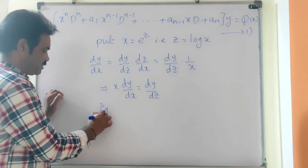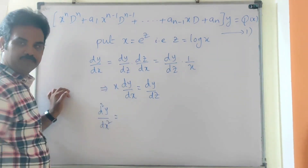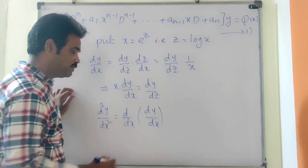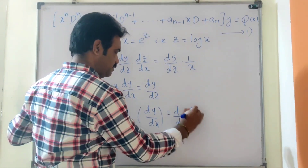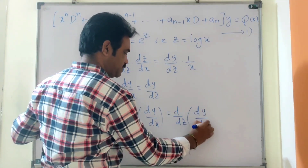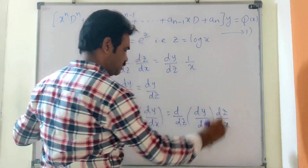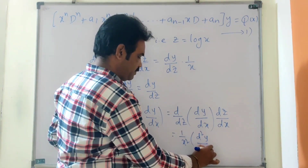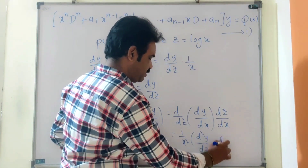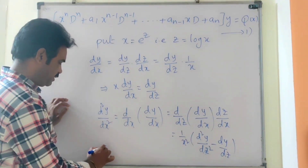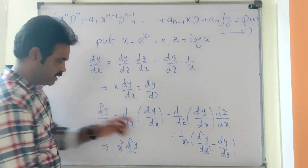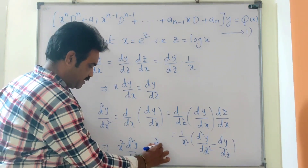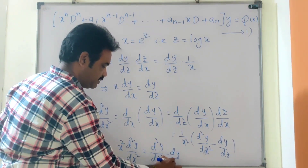Similarly, d²y/dx² = d/dx(dy/dx) = (d/dz)(dy/dx) · (dz/dx). Simplifying, we get (1/x²) · (d²y/dz² − dy/dz). From this, we get x²·(d²y/dx²) = d²y/dz² − dy/dz.